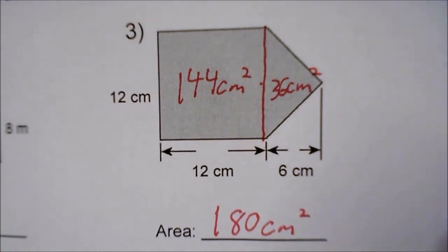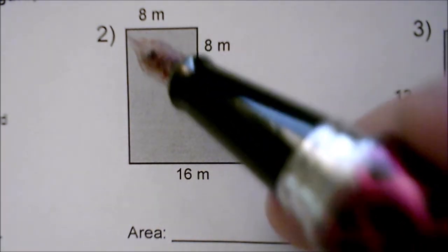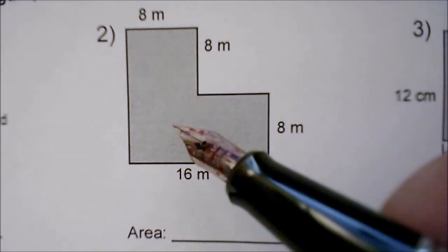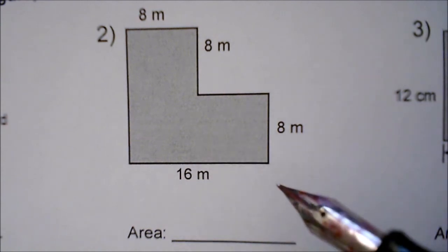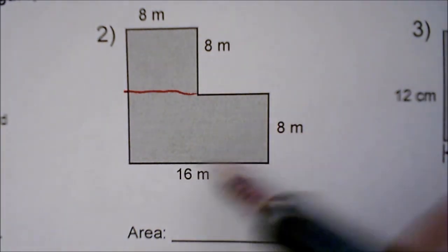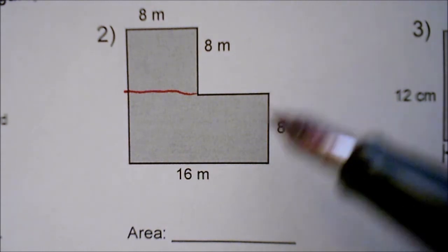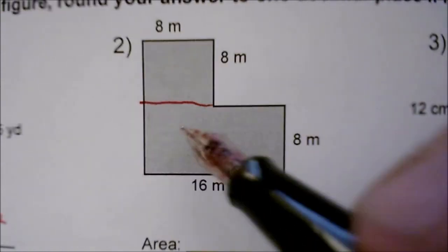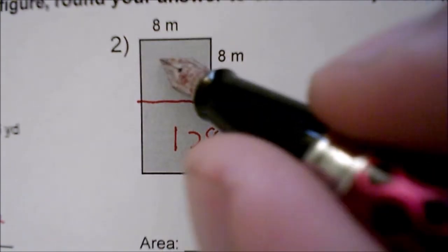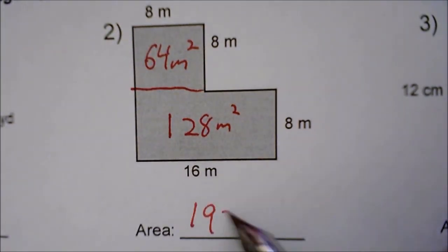One final example before I cut off. For this one, we have two places that we could cut it. We can cut it with a vertical line, but you will have to do some addition to find the height of this rectangle and some subtraction to find the width. So we will draw a horizontal line instead. In this case, we can see what the base and height of each shape is. The base of this shape is 16 and the height is 8, so 16 times 8 gives me an area of 128 meters squared. And 8 times 8 gives me 64 meters squared. Combining those two amounts gives me 192 meters squared.